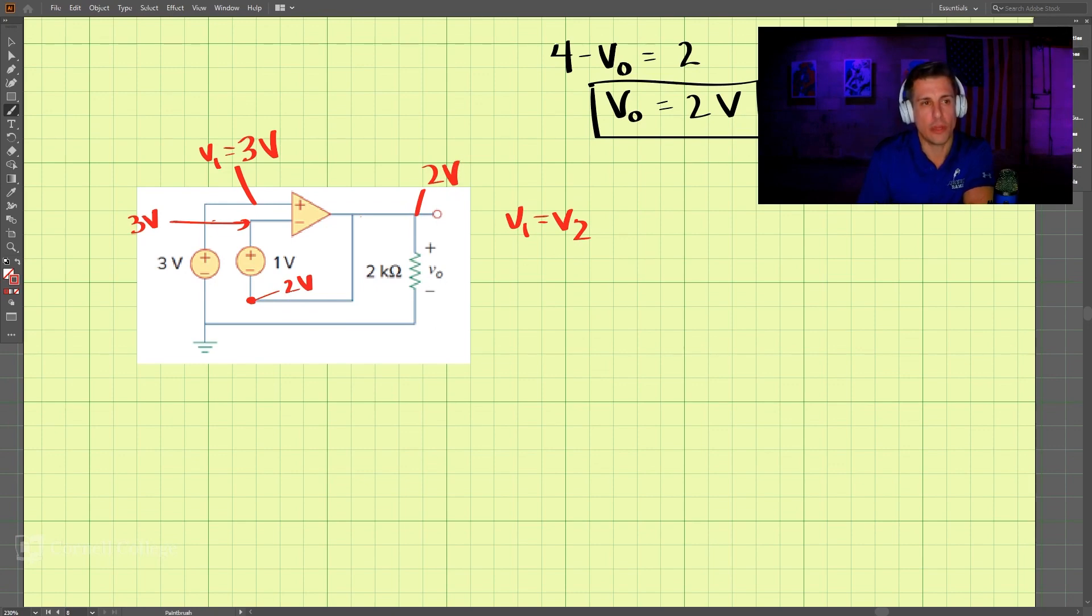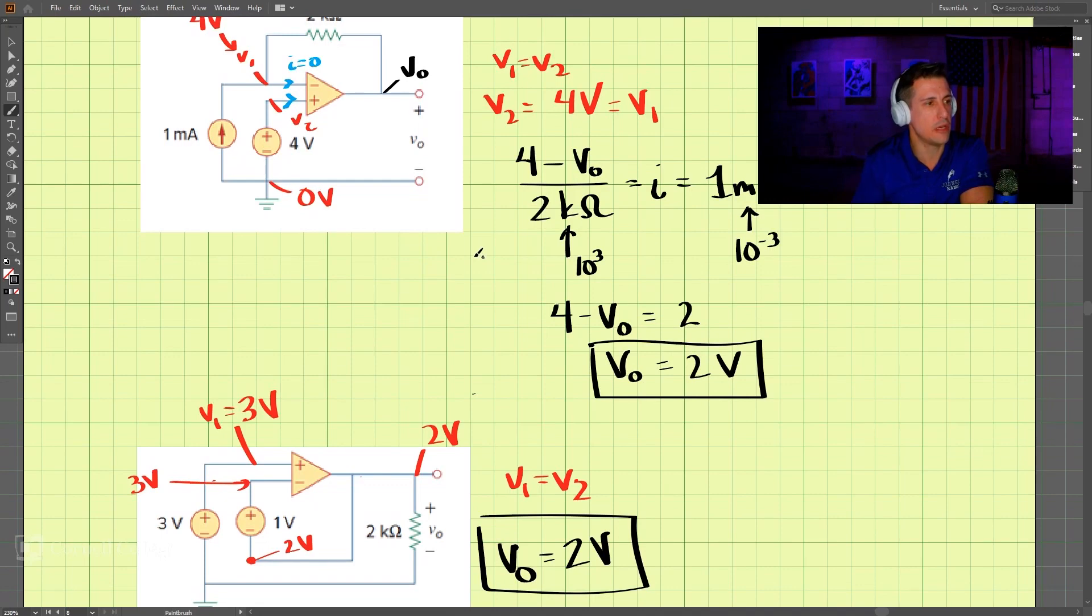So this one we can just take a look and see that v0 is equal to two volts. These two are both equal: v_out is two volts for both circuits.